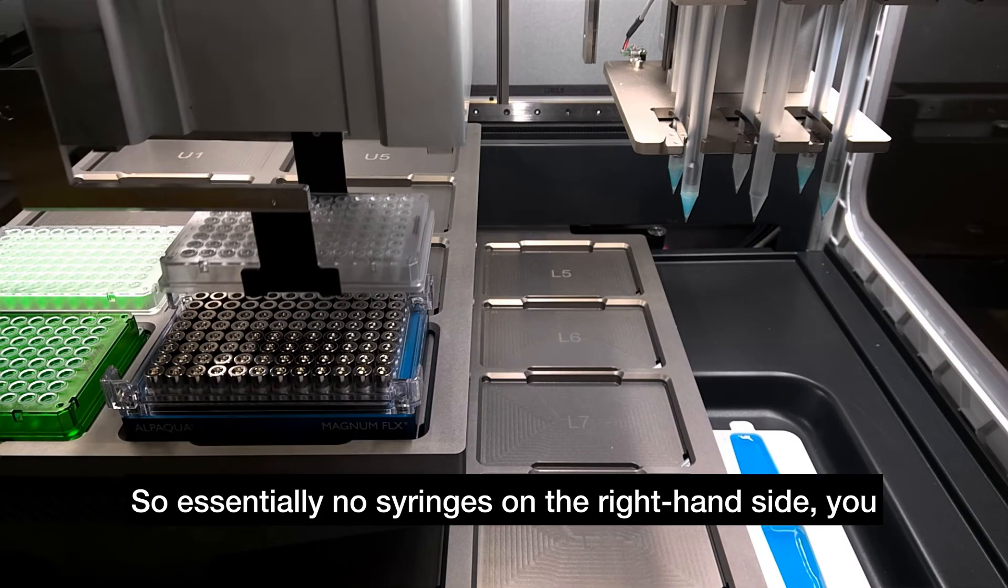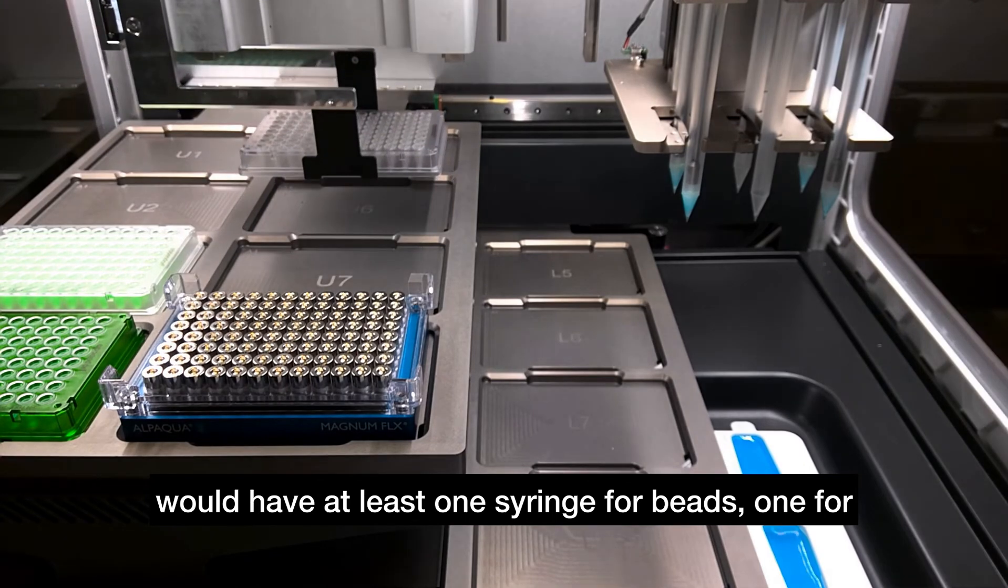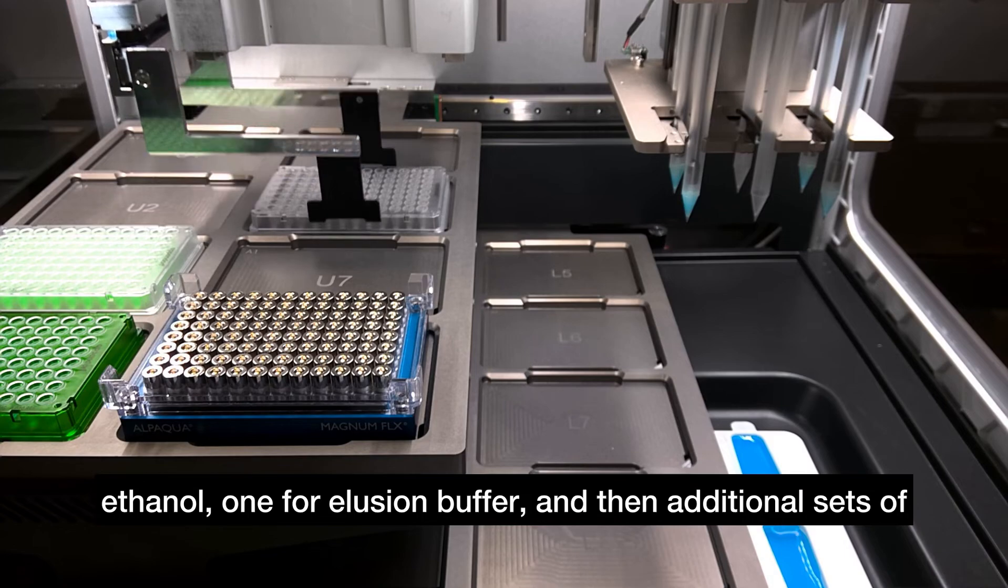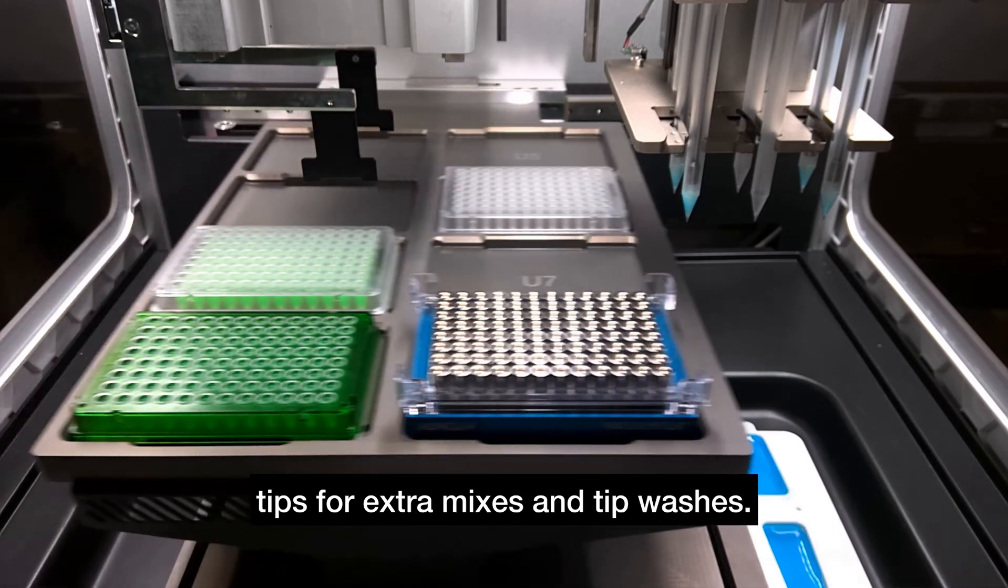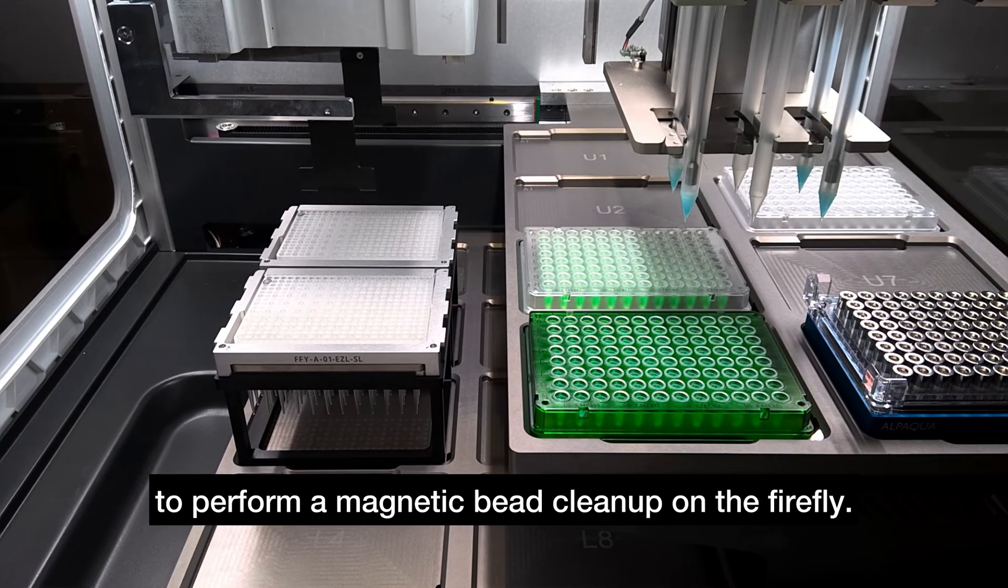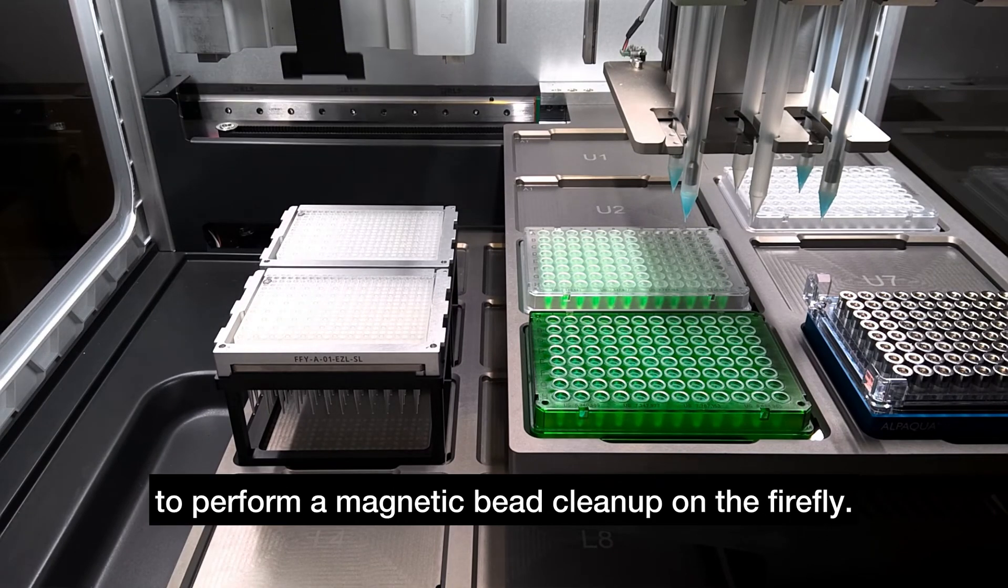So essentially in those syringes on the right hand side, you would have at least one syringe for beads, one for ethanol, one for elution buffer, and then additional sets of tips for extra mixes and tip washes. But hopefully you can see how easy it is to perform a magnetic bead cleanup on the Firefly.